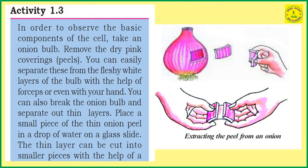Now, let us do this simple activity. In this activity, we need one onion bulb. He activity kosam, manam uakka ullipayanu piece kovali — remove the dry pink coverings.